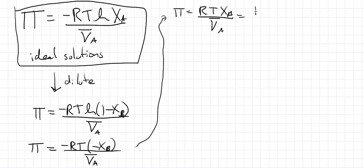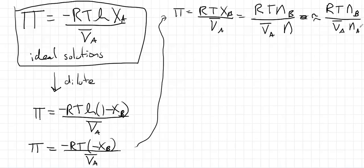And we can rewrite this as RT n_B over the total moles. And the total moles are approximately going to be equal to the moles of A. Let's go ahead and write that as an approximation. Because this solution is so dilute, most of the moles are coming from the solvent. So if the total moles are approximately the moles of A, we get this. Well, if we multiply the molar volume of A times the moles of A, we get the total volume.